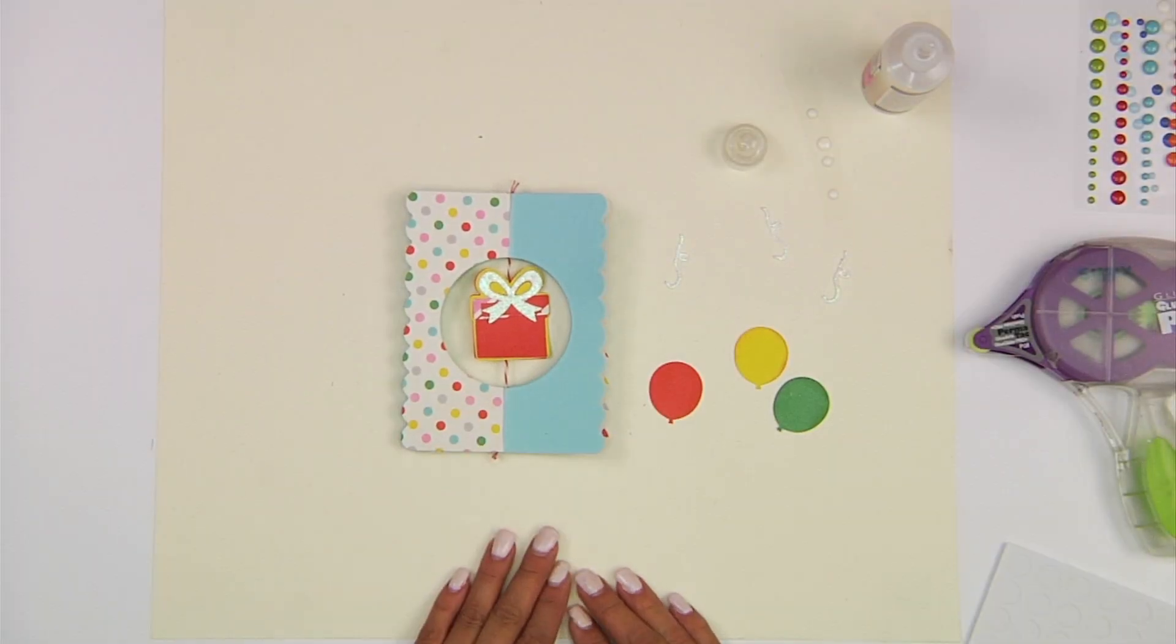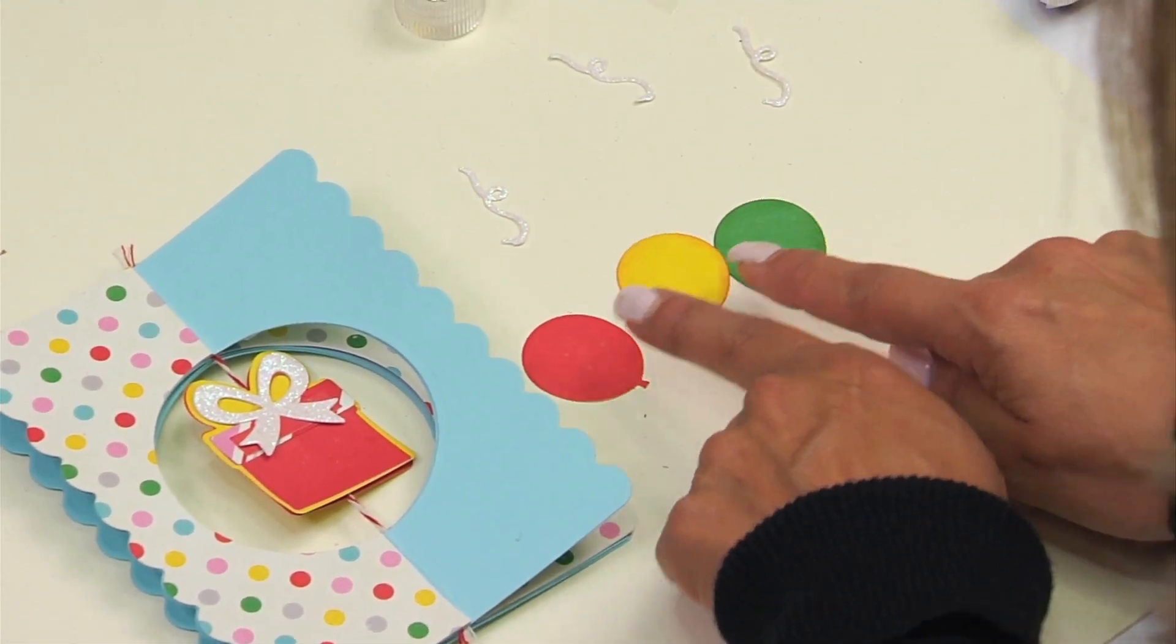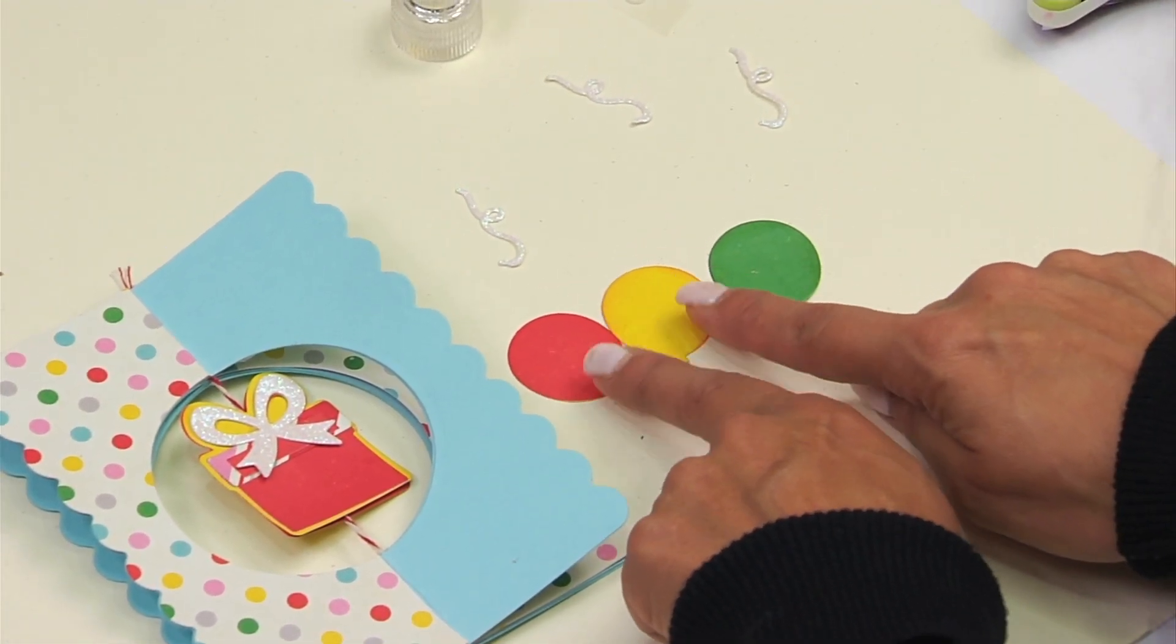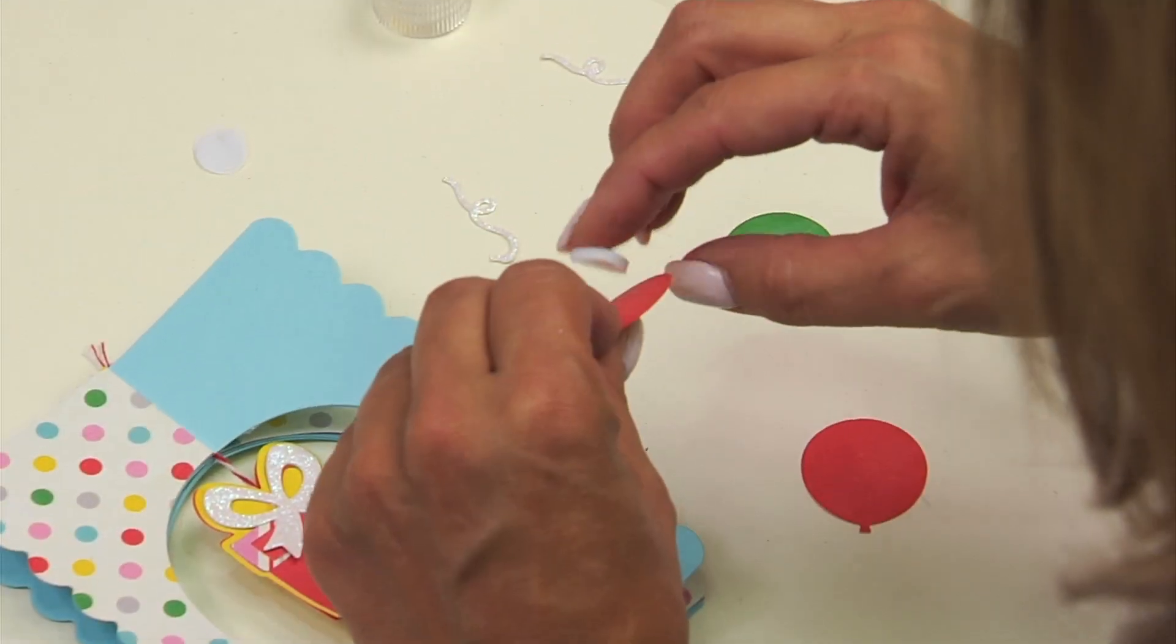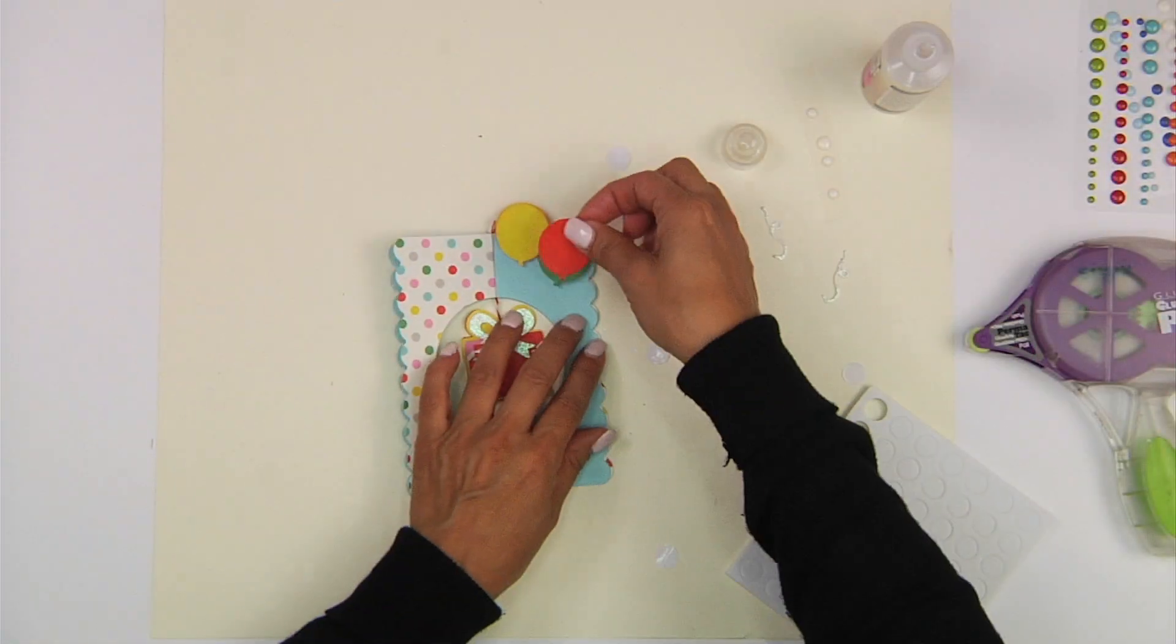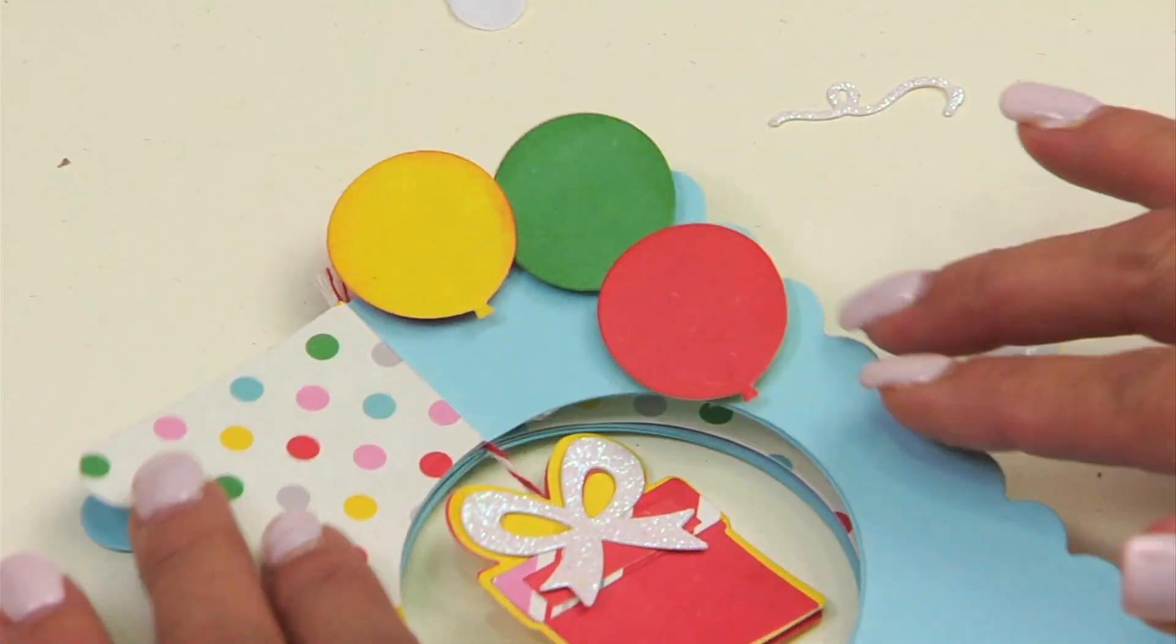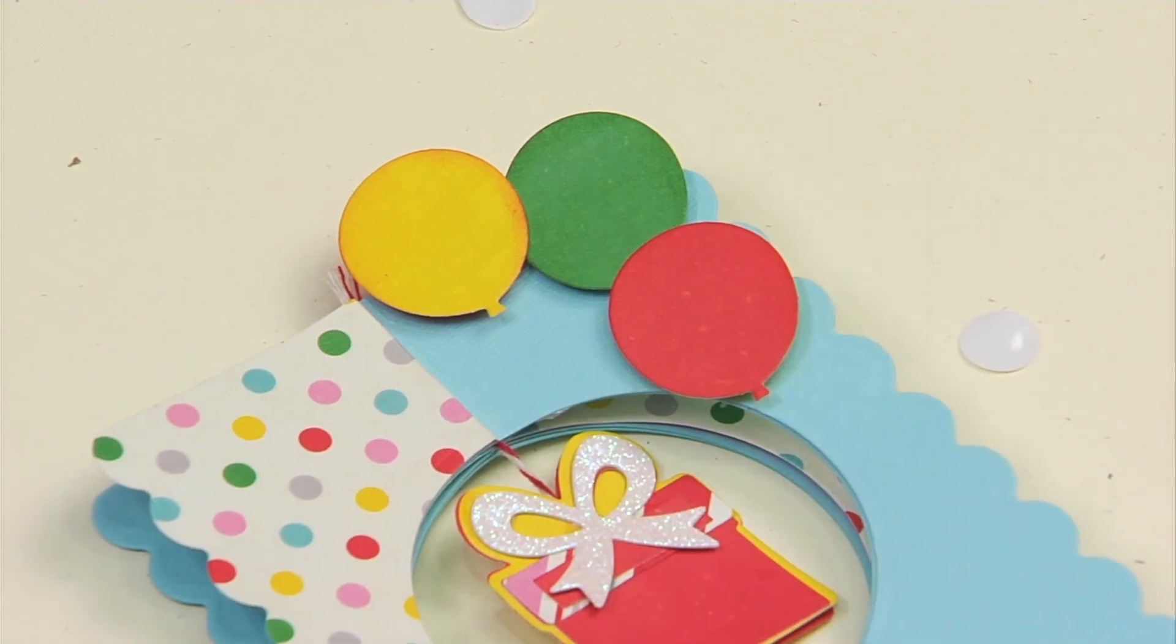Next, we're going to assemble our balloons and adhere them to our card base. Here, you'll notice I did a little bit of shading onto the outer edges of the balloon. Using pop dots, I'm going to adhere them to the upper right-hand side of the card. You just want to layer them along the top, just like that, and then add the streamers.